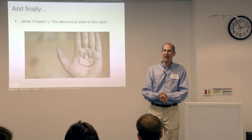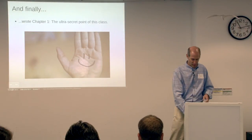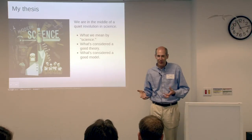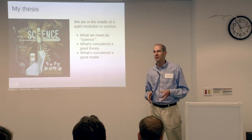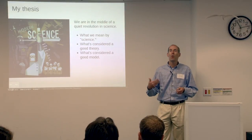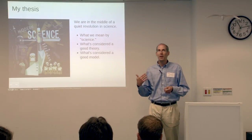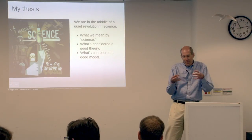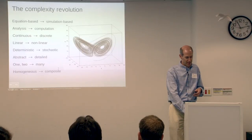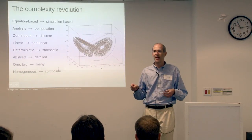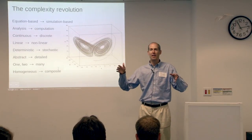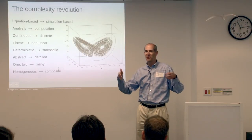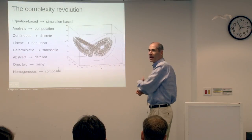In January I finally sat down and wrote what I think is the ultra-secret point of the book: the development of complexity science has caused a quiet revolution in science. What I mean is a shift in what kinds of activities we mean when we say science, what's a good theory, what's a satisfying explanation, what's a good model. I see the center of mass of scientific activity gradually shifting — from models in the form of equations toward simulation, from mathematical symbolic computation toward discrete computation, from continuous to discrete mathematics, from linear to non-linear models.